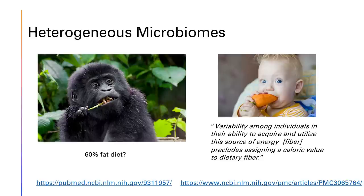Humans aren't that far off from gorillas. We don't have these big colons — you can actually see gorillas' protruding guts where their colons are. Ours are much leaner; we have smaller guts optimized more for eating animal foods, due to the small intestine to colon ratio. Bottom line: humans can extract calories from fiber, not as much as gorillas, but to some extent. And because of human heterogeneity — because we have different microbiomes — you can't actually assign a caloric value to fiber, because different people get different numbers of calories from fiber.